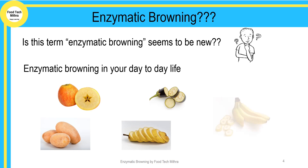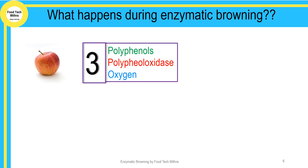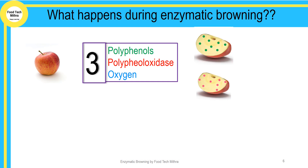Now let us look a little deeper into the reaction behind enzymatic browning, taking apple as an example. The three components responsible for triggering enzymatic browning in fruits and vegetables are: phenols or polyphenols, polyphenol oxidase (or phenolase enzyme), and oxygen. When the phenolic compounds of fruits and vegetables react with oxygen in the presence of polyphenol oxidase, browning occurs.